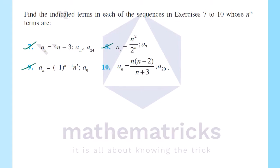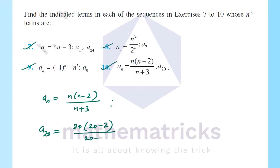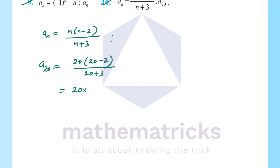Next, the 10th question: aₙ = n(n - 2) / (n + 3). We need to find a₂₀. So a₂₀ = 20 × (20 - 2) / (20 + 3) = 20 × 18 / 23 = 360 / 23. That is the answer.